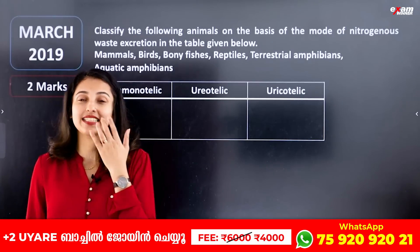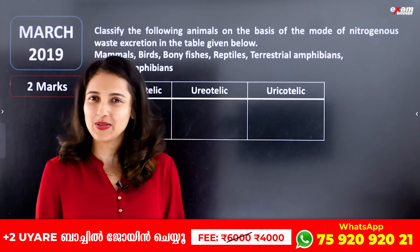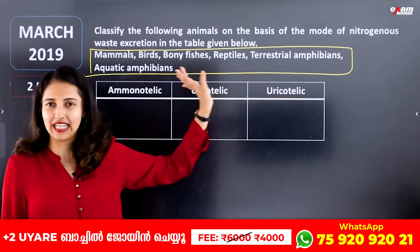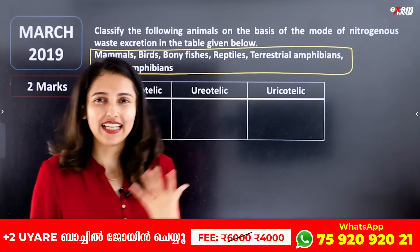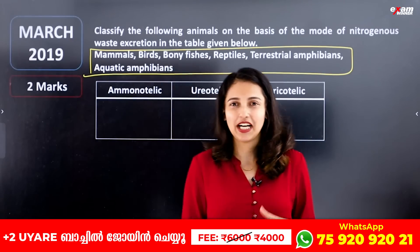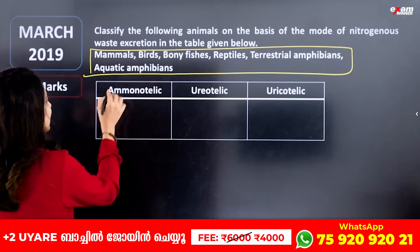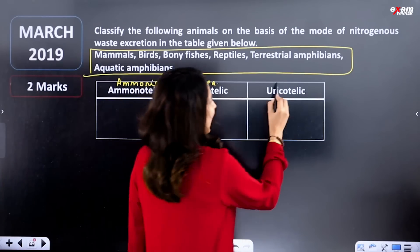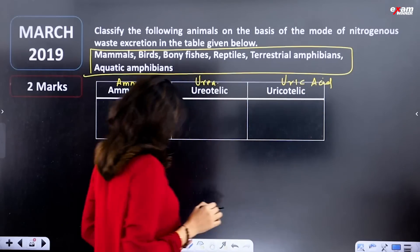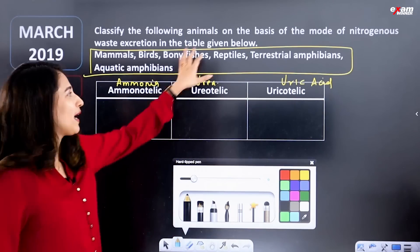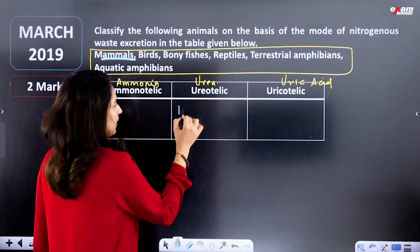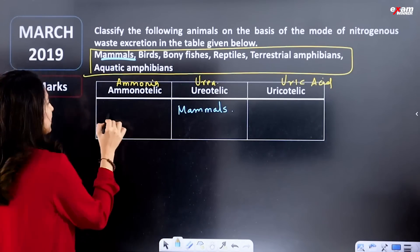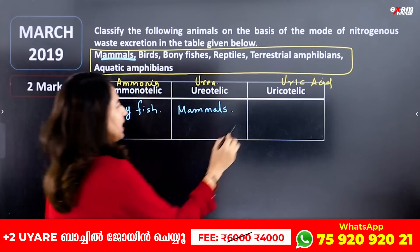Now we are going to talk about excretion. We need to write a correct table. The types are Ammonotelic, Uriotelic, and Uricotelic. Ammonotelic organisms excrete ammonia as the waste product. Uriotelic organisms excrete urea. Uricotelic organisms excrete uric acid. For example, mammals are Uriotelic. Bony fishes are Ammonotelic. Birds are Uricotelic because they need to minimize water loss.